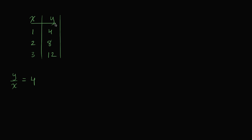I can make another column here where I have y over x. Here it's four over one, which equals four. Here it's eight over two, which equals four. Here it's twelve over three, which equals four. So you can use this information — the ratio between y and x is the constant four — to express the relationship between y and x as an equation.